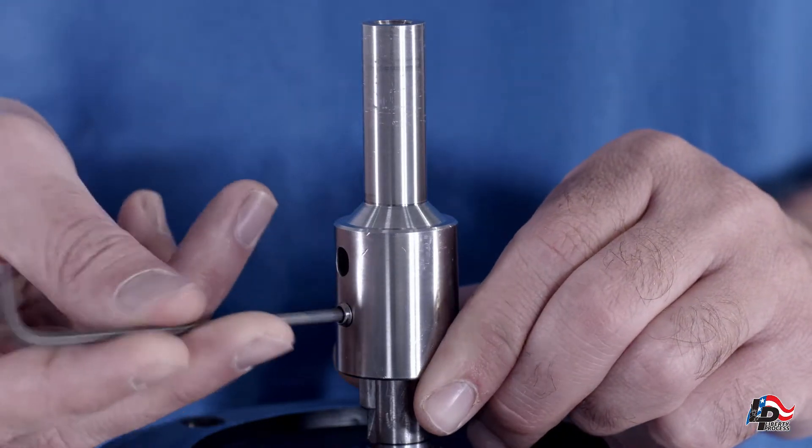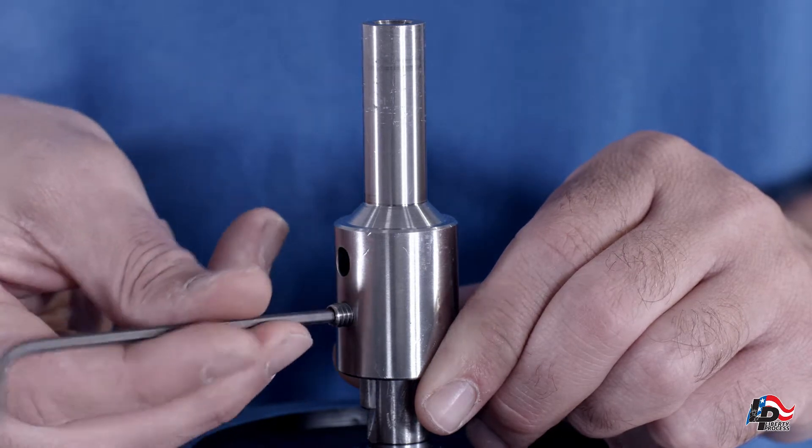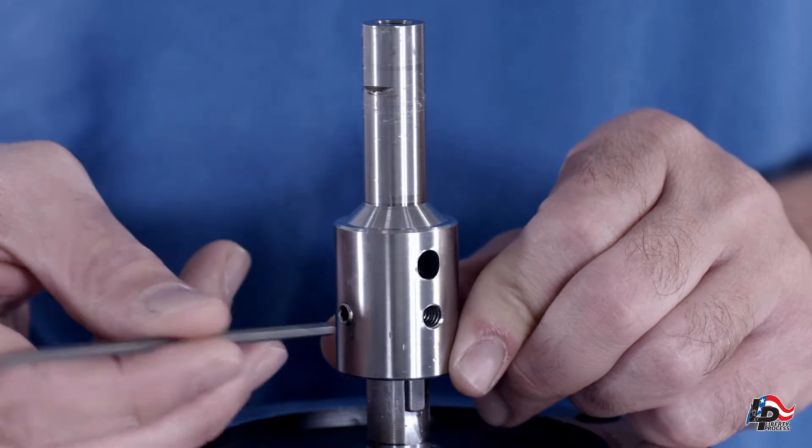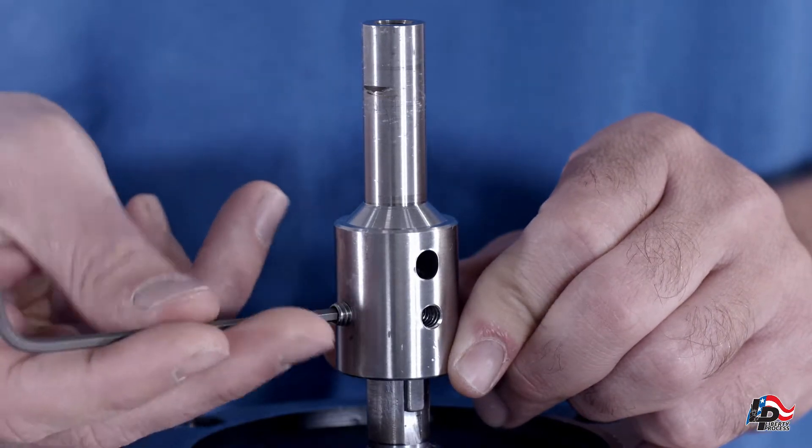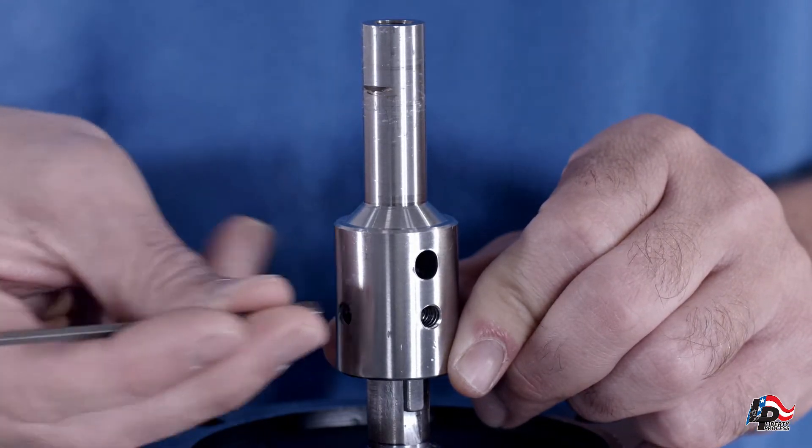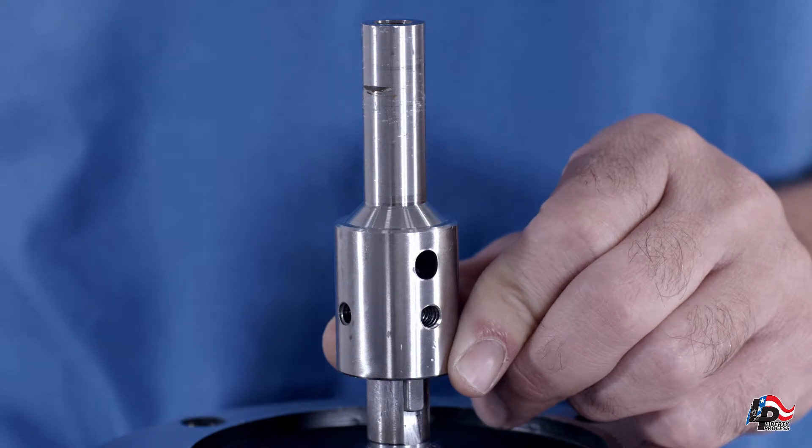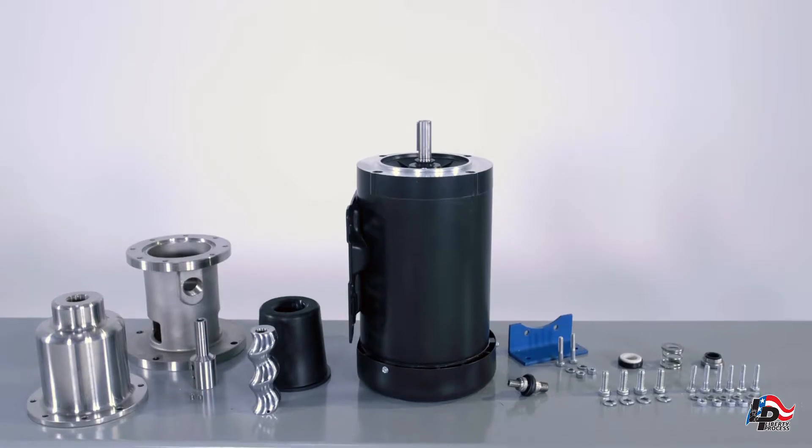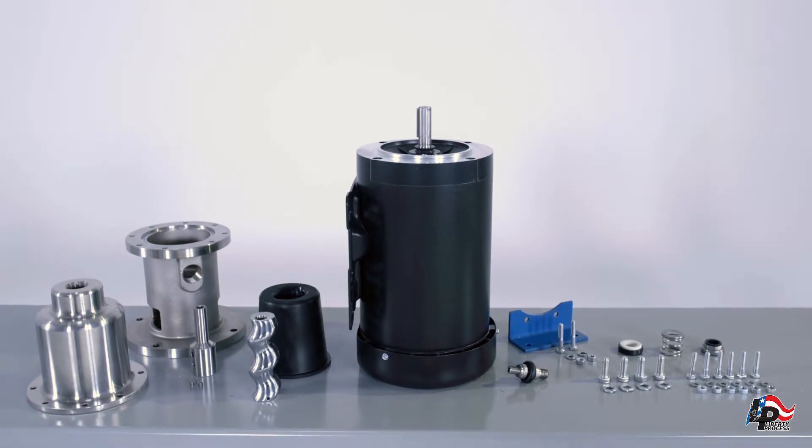Loosen and remove the set screws from the pump stub shaft. Remove the pump stub shaft from the motor shaft. You have now completely disassembled your Liberty APM44 wobble stator pump.